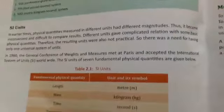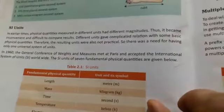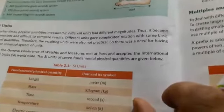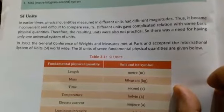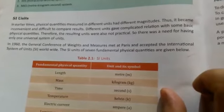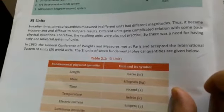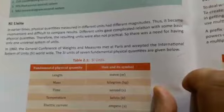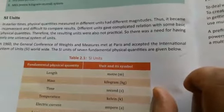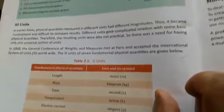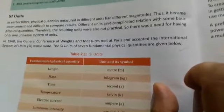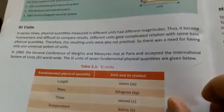In earlier times, physical quantities measured in different units had different magnitudes. Thus it became inconvenient and difficult to compare results. Different units have complicated relations with some basic physical quantities. Therefore, the resulting units were also not practical. So there was a need for having only one universal system of units.